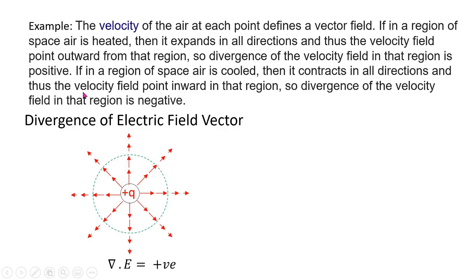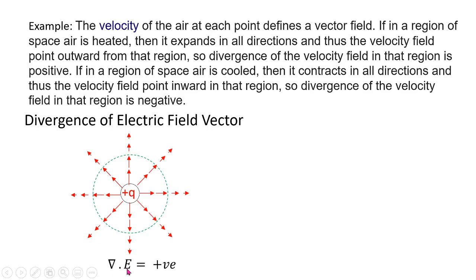Second example: divergence of the electric field vector. Consider a positive charge — from a positive charge the electric field vectors point outward. Consider a spherical surface bounding the region around the charge. The flux of the electric field is outward through that surface. Therefore in this case divergence is positive: del dot E-bar is positive.